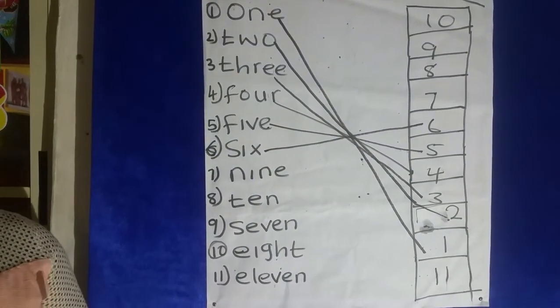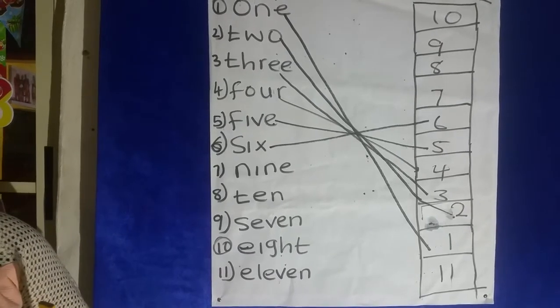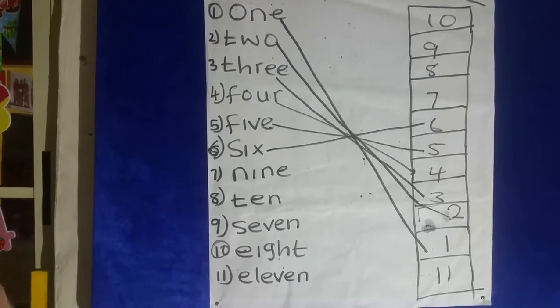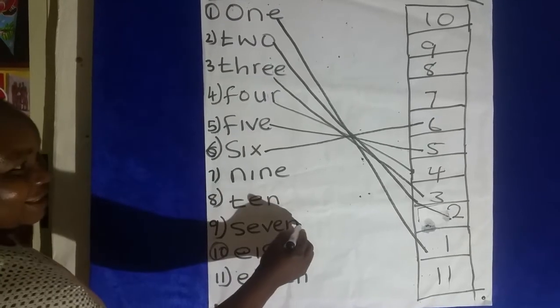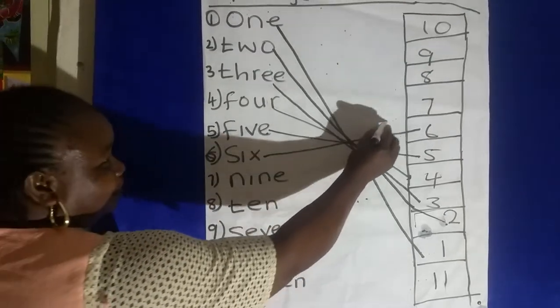Spell number seven for me. Spell it again. Good. Seven. S-E-V-E-N. Look at it here. Take it to number seven.